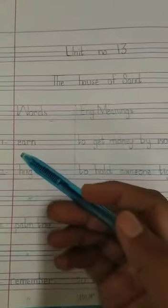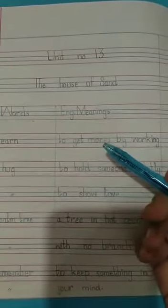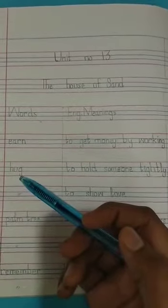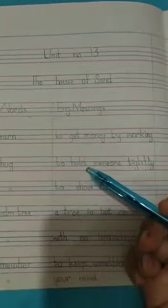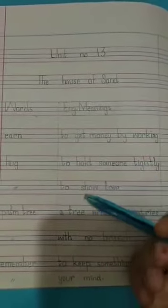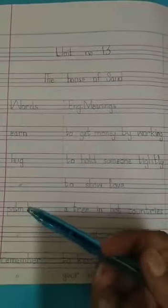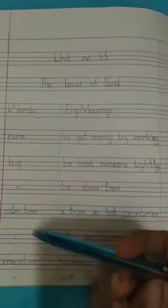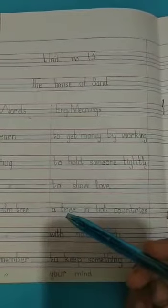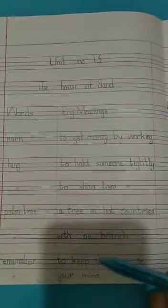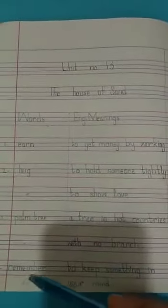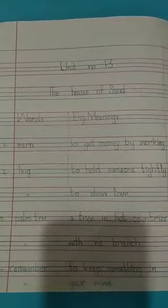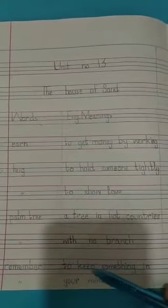Dear students, let's revise once more. Here we have first word, earn, meaning to get money by working. Next word, hug, meaning to hold someone tightly to show love. Third word, palm tree, meaning a tree in hot countries with no branch. Last word, remember, meaning to keep something in your mind.